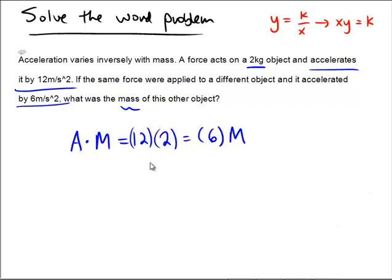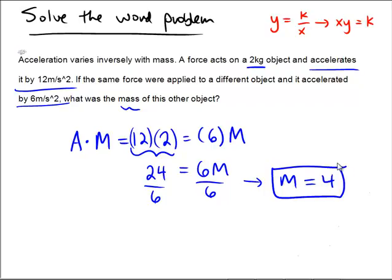So notice that 12 times 2 is 24. 6 and the unknown mass of m. And so divide both sides by 6 and it means that the mass of that object must have been 4. 6 times what is 24? That must be the number 4.